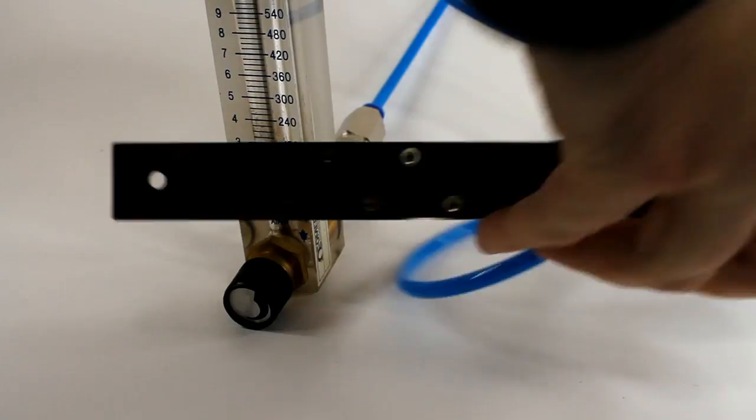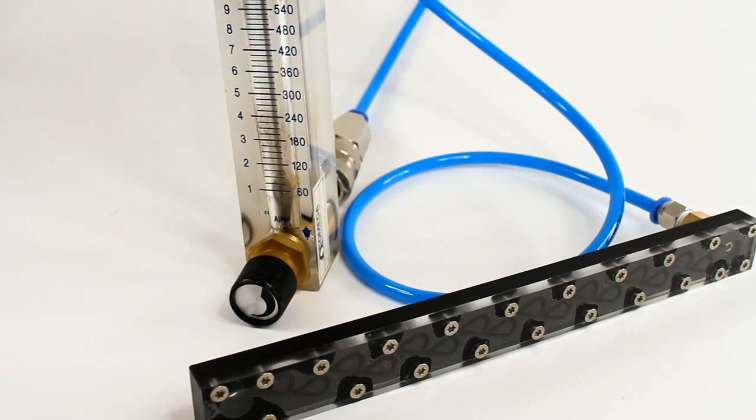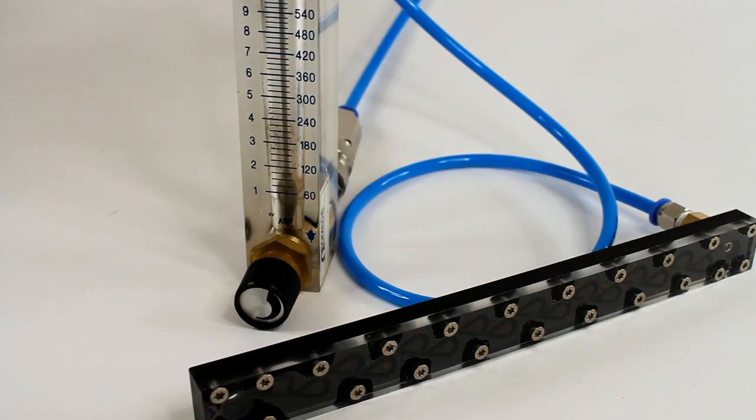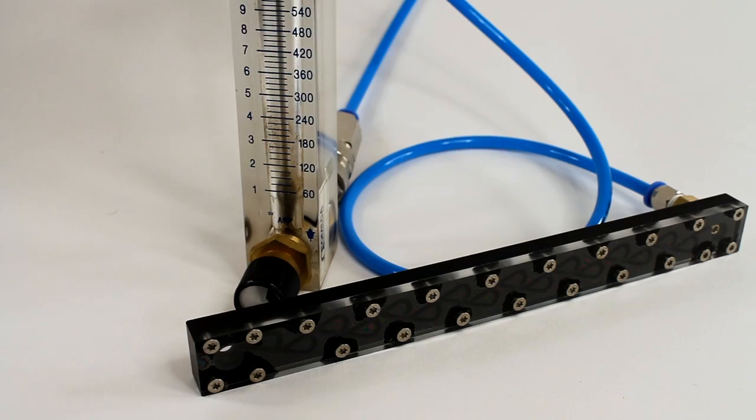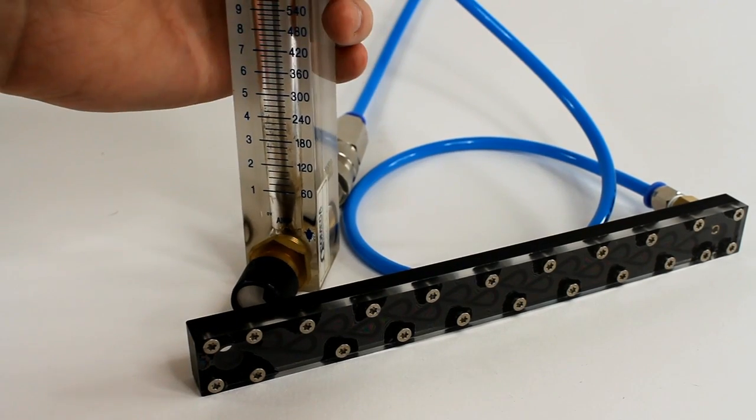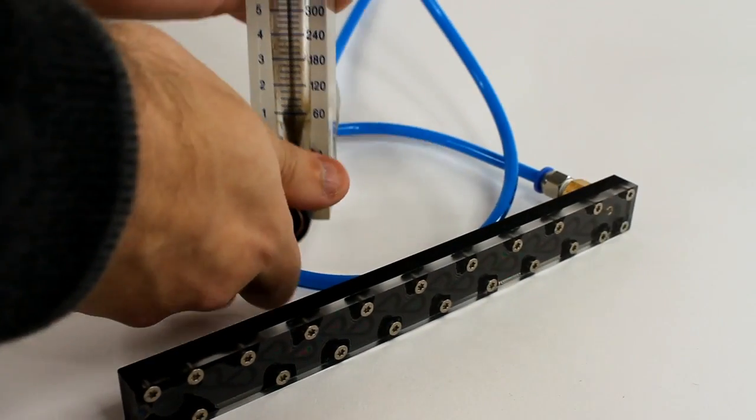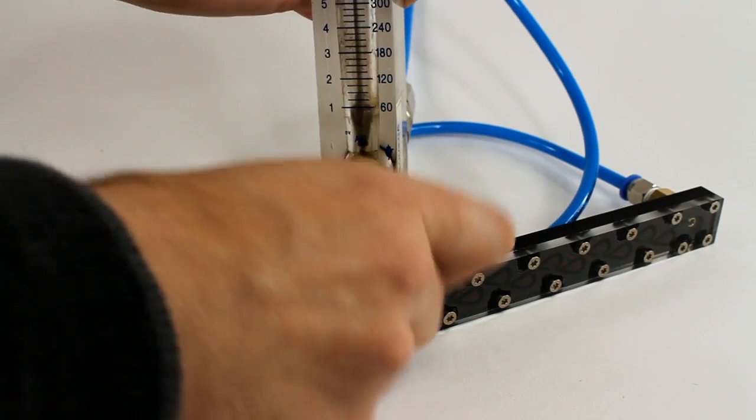So this should allow more air to go through. Once again, I'm going to turn the air out on the actual flow valve.